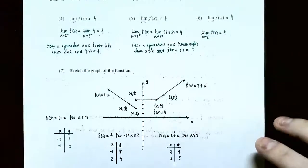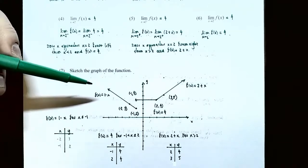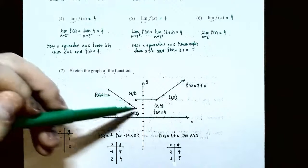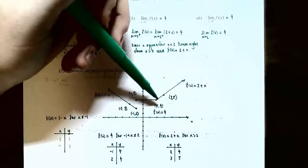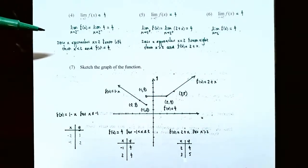And there's the graph of the function for part seven — a line segment, then a horizontal line segment, then a line going up — because it's a piecewise defined function. This is a good place to stop our first video. We talked about the definition of a limit, one-sided limits, two-sided limits, and when a two-sided limit exists. We covered how to find a limit using a graph and using a table of values. In the next video, we'll talk about how to find a limit using algebraic methods — finding a limit algebraically or analytically.